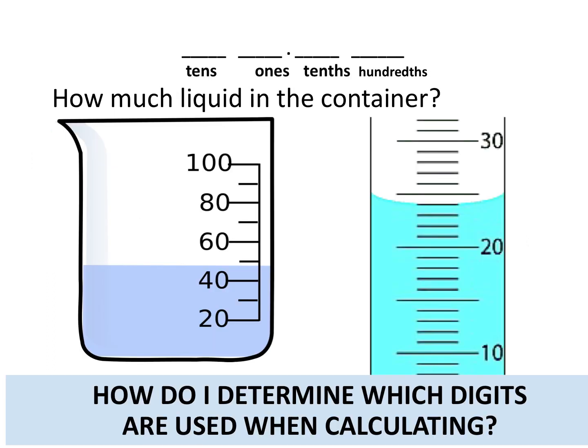Looking at how much liquid is in the container on the beaker, because I can see the tens position but I can't see past that, I'm going to estimate to the ones. In this case, I can say 48, I could say 49, I could say 47. All those would be correct, but I can only estimate to that ones position.